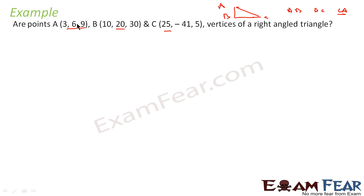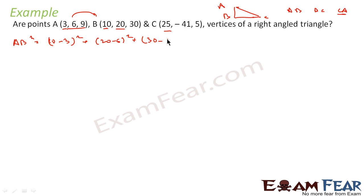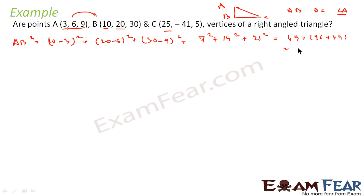So let us find AB² first. AB² is nothing but (10 minus 3)² plus (20 minus 6)² plus (30 minus 9)². This came out to be 7² plus 14² plus 21², which is 49 plus 196 plus 441, and that value is 686.